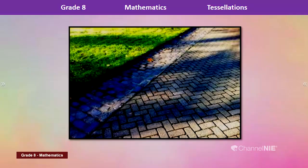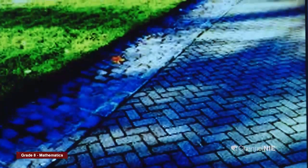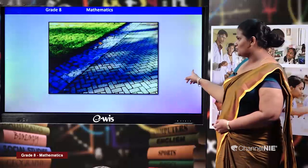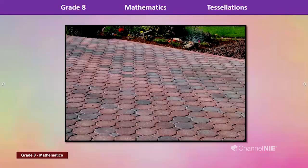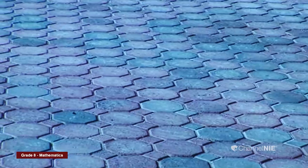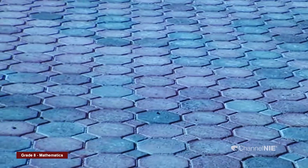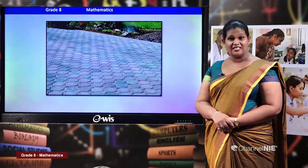Here we can see some bricks fixed on the floor to create a beautiful pattern. You may have noticed this in a park or walking path. Now once again I can see some hexagons, and at the same time there are some squares as well. They have placed hexagons and squares to create beautiful patterns. Can you consider this pattern as a tessellation? Think about things you have learned in grade 7.